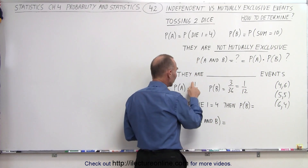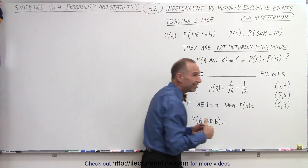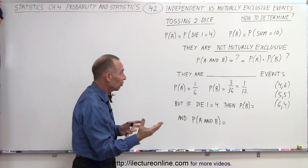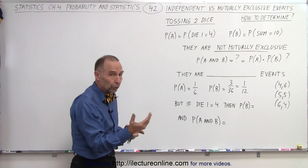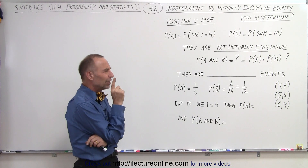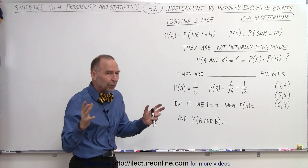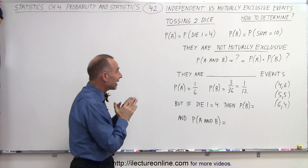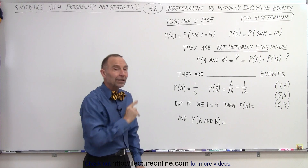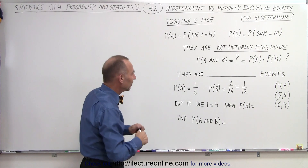If we multiply 1/6 times 1/12, we get 1/72. But there aren't 72 combinations when throwing two dice. So if the probability of A and B is not equal to the product, that means they cannot be independent events.